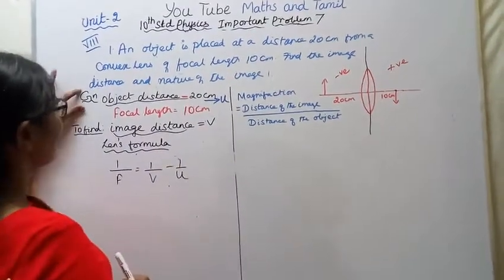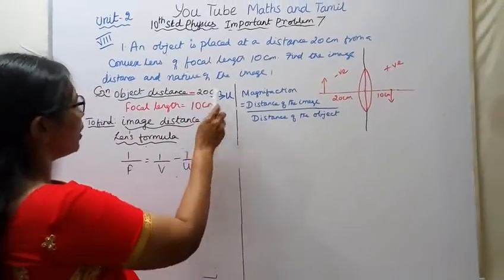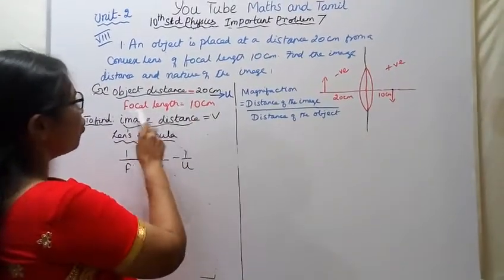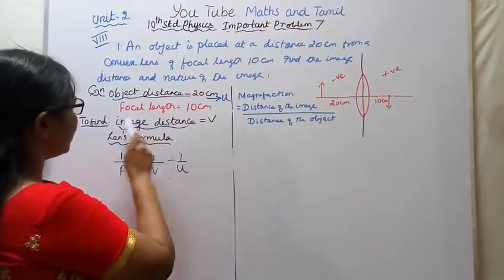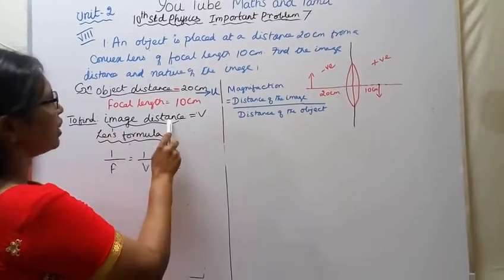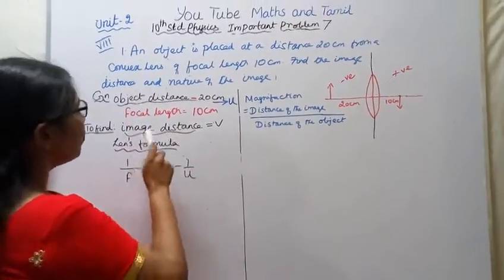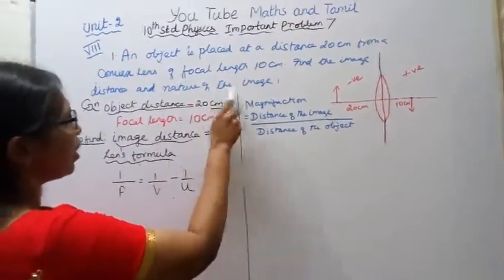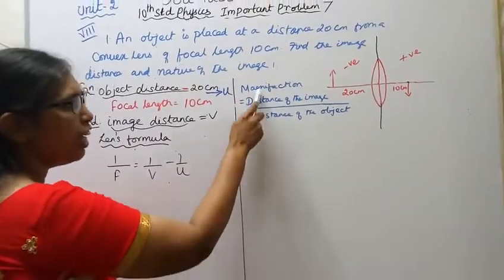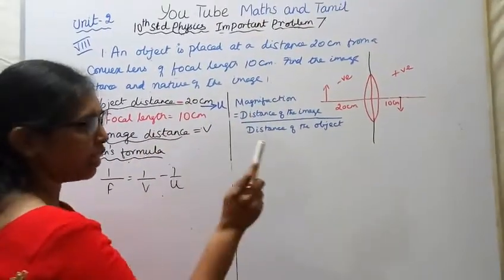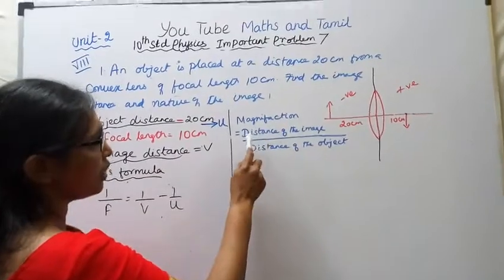Given: object distance is 20 cm, focal length is 10 cm. To find: image distance and the nature of the image.